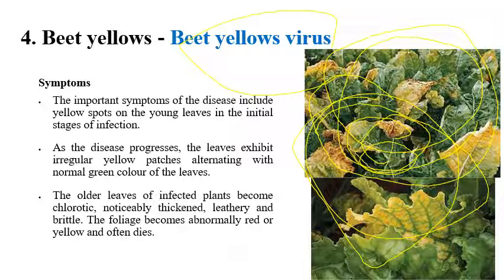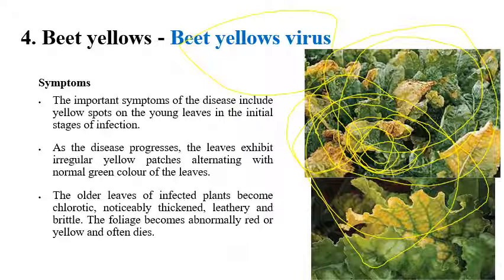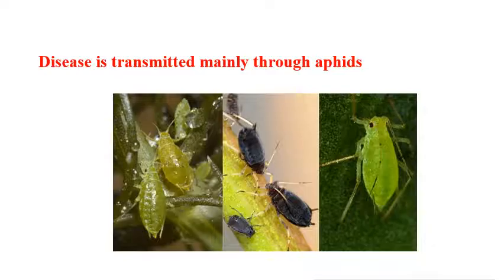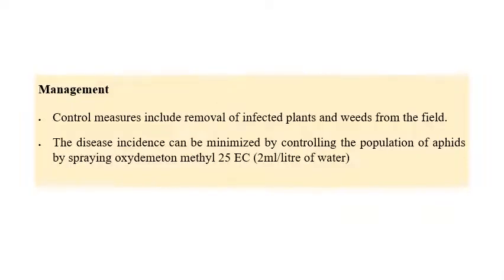Older leaves of the plant become chlorotic, thick, leathery, and brittle, with shrinking especially at the midrib region. From a distance, abnormal red color variations mixed with yellow color discolorations can be clearly seen. This disease is mainly transmitted by aphids — there are many species including black aphids. Controlling aphid transmission is key to controlling this disease effectively.